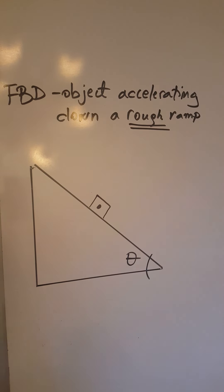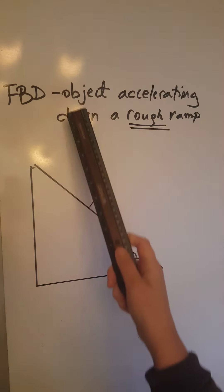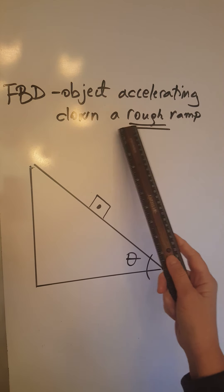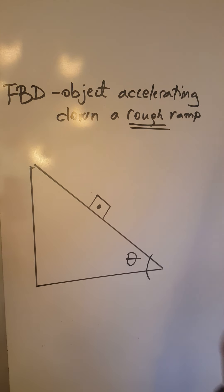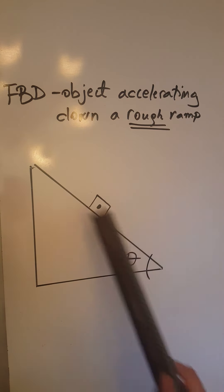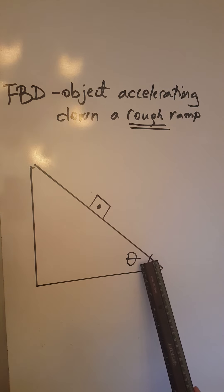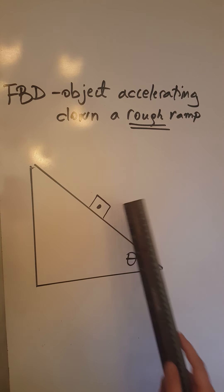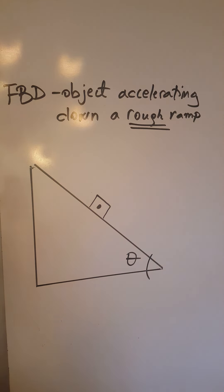Let's go ahead and create a free body diagram for an object accelerating down a rough ramp. Here is our ramp of inclination theta, and here is the object that we are going to look at.